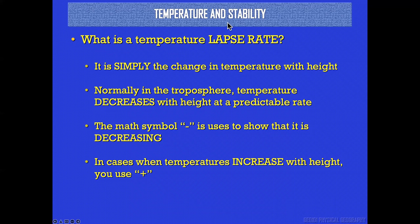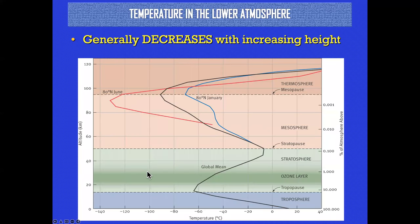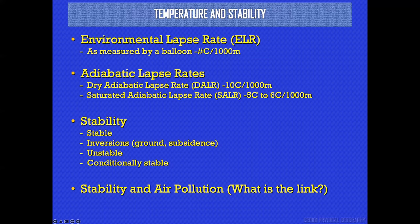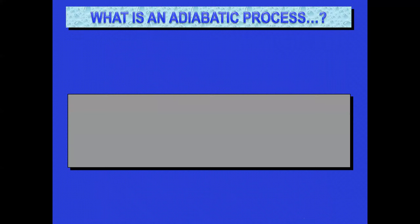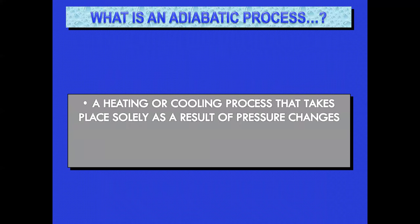Here's a general lapse rate of the atmosphere — in the lower part it decreases, then it increases, then it decreases again. An adiabatic process is heating or cooling that takes place simply because pressure changes. Imagine you buy a bag of chips at the beach, then drive to a ski resort at 12,000 feet — that bag of chips is going to look like a pillow because there's less pressure acting on it. As pressure decreases, temperature also decreases — that's an adiabatic process.